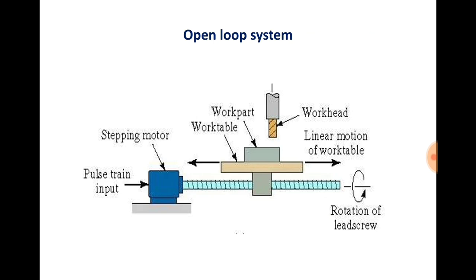This is the open loop system arrangement found in NC machines. In this diagram you can see a stepper motor attached to a lead screw arrangement. The lead screw is attached to the work table, and you can place your work part on the work table. The stepper motor is given certain pulses, causing it to rotate. As the stepper motor rotates, the lead screw rotates, and the rotary motion of the lead screw is converted into horizontal motion of the work table. There is no mechanism or device sensing the rotation of the lead screw, on which the table's horizontal motion depends.